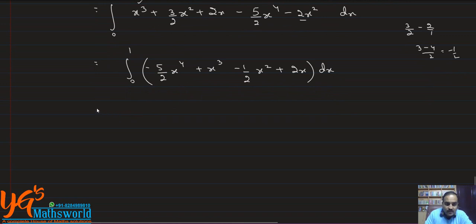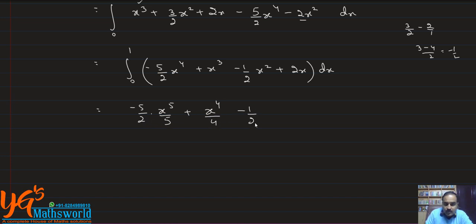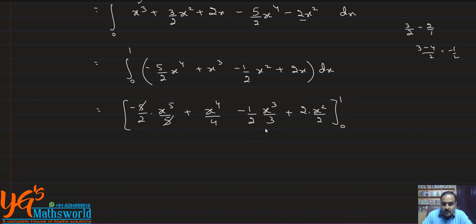Now integrating with respect to x: −(5/2)·(x⁵/5) + x⁴/4 − (1/2)·(x³/3) + 2·(x²/2), within limits 0 to 1. The 5s cancel and the 2s cancel, leaving us with −(1/2)x⁵ + x⁴/4 − x³/6 + x², evaluated from 0 to 1.